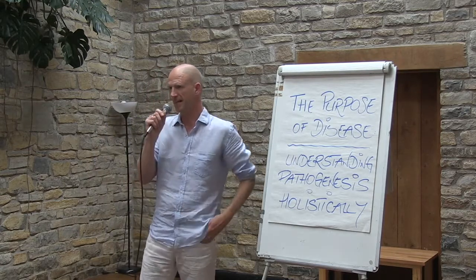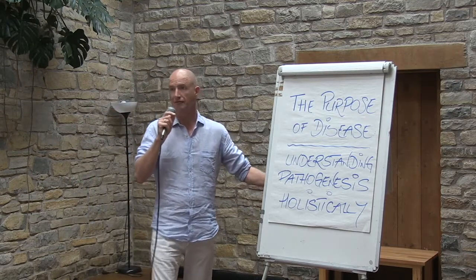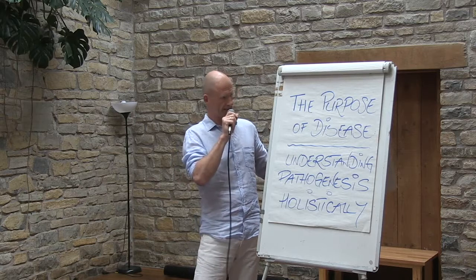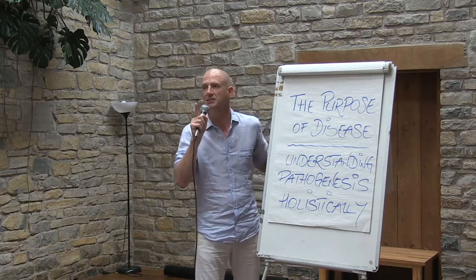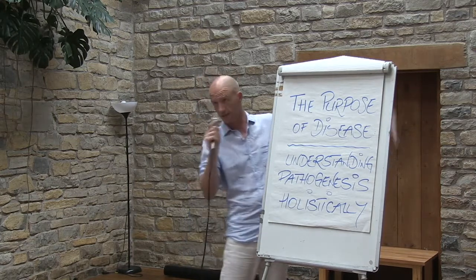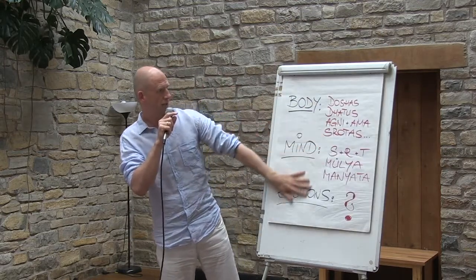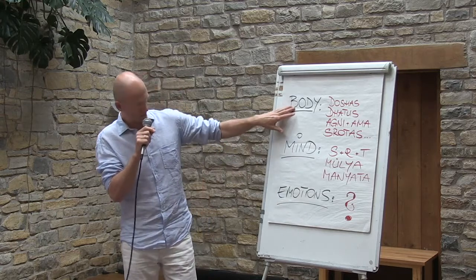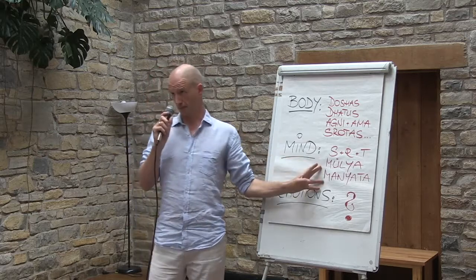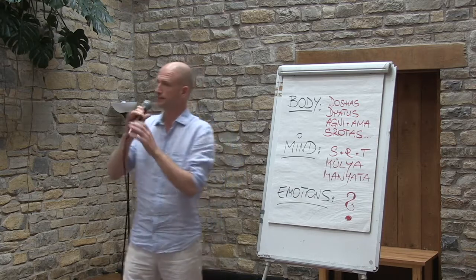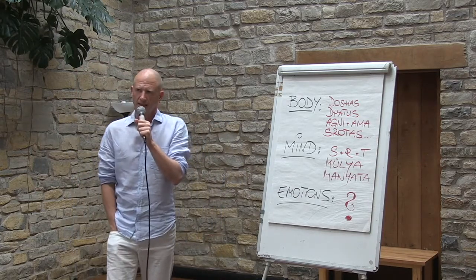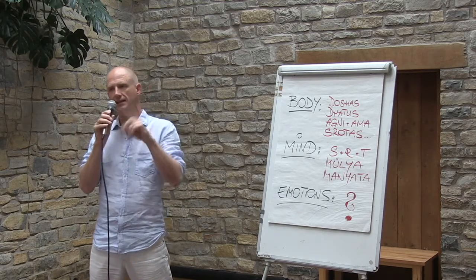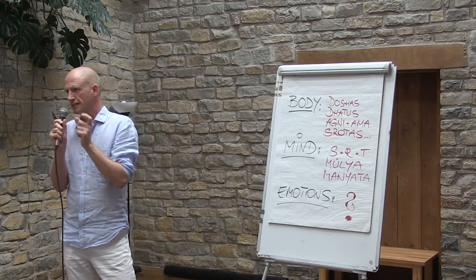I didn't find anything in my formal studies beyond sattva, rajas, tamas. There are two other things: mulya and manyata. Mulya — values. Values meaning good and bad, those dual values, like the 20 gunas — hot and cold — but on a mental level. This is important in the context of the mind because this is what the mind does: the mind can only judge. That's the mechanics — not judgmental, it just judges non-judgmentally.